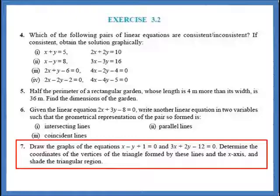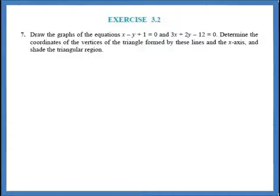These are the questions from Exercise 3.2, questions 4 to 7, and in this video I am covering the 7th question which has been highlighted by a red boundary. In this question, we have been asked to draw the graphs of the equations x minus y plus 1 is equal to 0, and 3x plus 2y minus 12 is equal to 0. Determine the coordinates of the vertices of the triangle formed by these lines and the x-axis, and shade the triangular region.